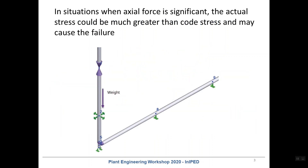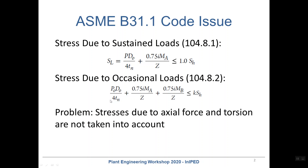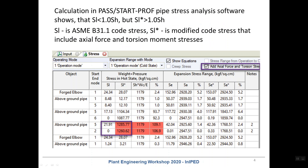Now let's check this model. For example, we have a very tall riser — a very tall pipe with a great height. In this model we will have a very high axial force, and the stress caused by this axial force will be very high. But ASME B31.1 code ignores this stress and does not take it into account. So let's check this model using StarProf software.